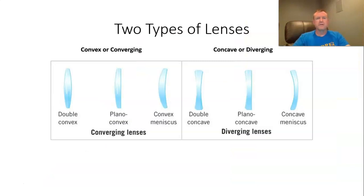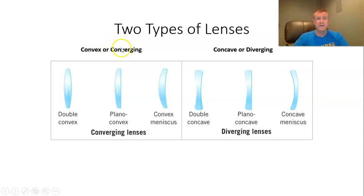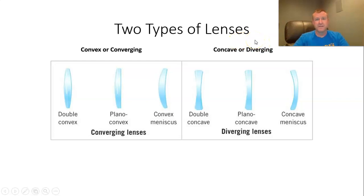Two types of lenses: convex and concave. Sounds a lot like mirrors, but be very careful. A convex lens is a converging lens — if you remember, a convex mirror was a diverging mirror. And a concave lens is a diverging lens — if you remember, a concave mirror was a converging mirror. So be careful with the terminology there.